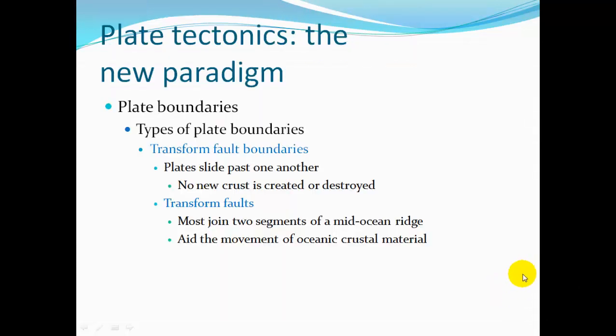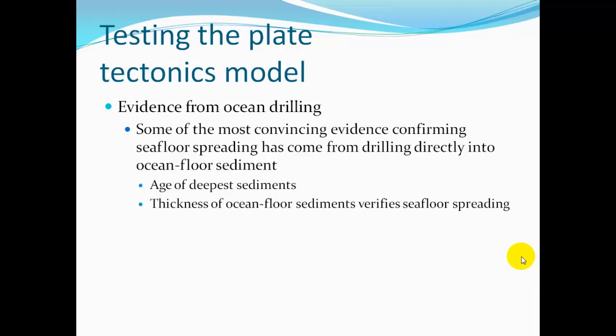Transform fault boundaries are where no crust is destroyed and no crust is created. The plates slide against and past each other, forming transform faults. Most join two segments of mid-ocean ridge and aid the movement of ocean crustal material. One famous transform fault boundary is the San Andreas Fault in California.